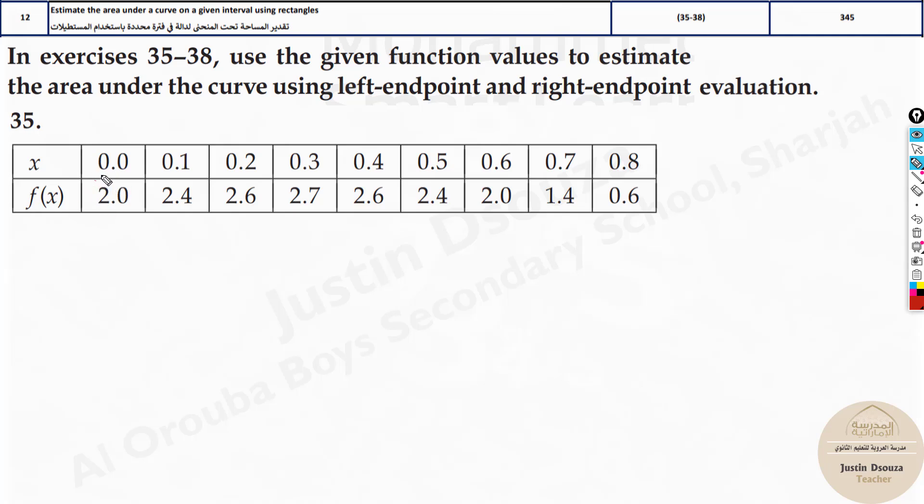You should just understand when we use the left endpoint we have to use the leftmost value. See from this f of x values, from this we begin. We start this, next this, this, this and it goes on. We don't use the last value. This is omitted. We leave that.